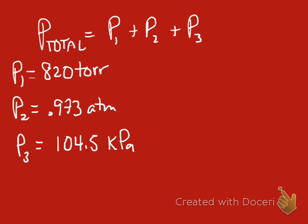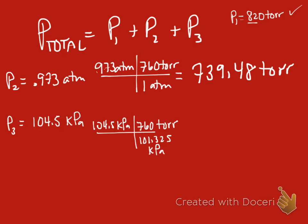It doesn't matter what units you convert into unless that is specified in the question. I have a personal fondness for torr, and that's also the thing that has our limiting number of sig figs. So, I'm going to go ahead and convert everything into torr. I've set up each of my conversions. Here I have 0.973 atms. In converting into torr, knowing that 760 torr is equal to 1 atm, I get 739.48 torr.